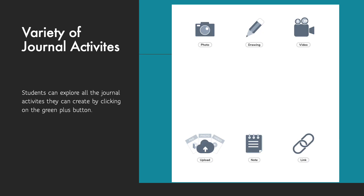Seesaw provides a variety of journal activities. Students can explore all of these activities by clicking on the green plus symbol on their journal page. They can add photos or videos, they can draw, they can upload, they can add notes, and they can hyperlink.